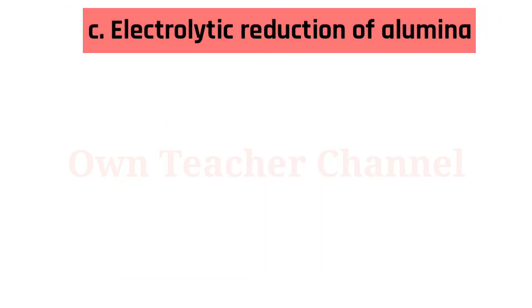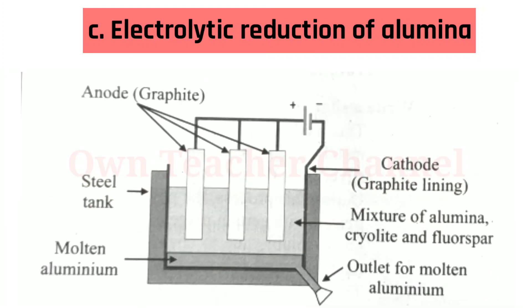Electrolytic Reduction of Alumina: Electrolysis of alumina is carried out in an electrolytic cell at a much lower temperature by dissolving it in molten cryolite and fluorspar. The addition of cryolite and fluorspar reduces the melting point to about 1000 degrees Celsius.